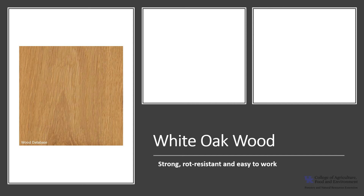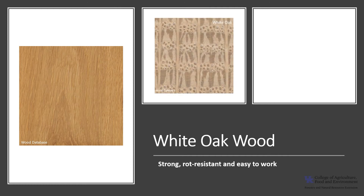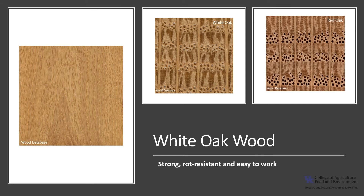The heartwood of white oak is typically a light to medium brown and the sapwood is light brown. The grain is straight with a coarse uneven texture. Oaks are ring porous with rows of large pores, as you can see in the photo here. In white oak these pores are filled with tyloses, which makes this wood desirable for making barrels that contain liquid because it will not leak out. The pores in red oaks are open, which is a good characteristic to help you identify red oak wood from white oak wood.